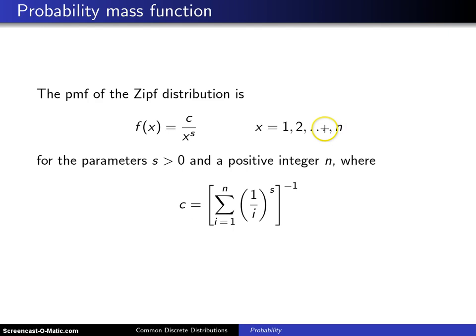There are a total of n words, cities, or websites. The first couple are the popular ones, and the trailing ones at the end are the less popular ones. The parameter s controls how popular or unpopular things are — it controls the mass values associated with all values on the support. n is a positive integer, and the constant c is a function of n and s that serves as a normalizing mechanism to make the probability mass function sum to 1.